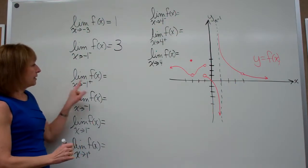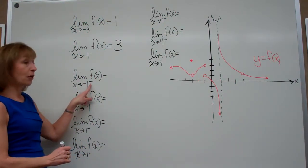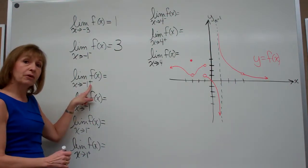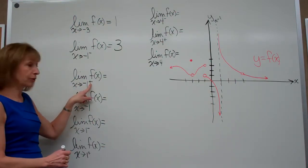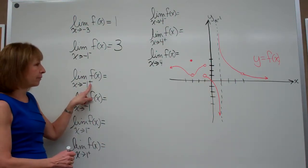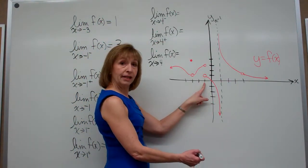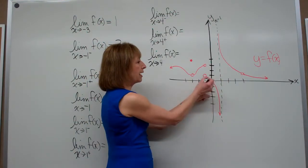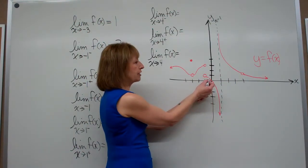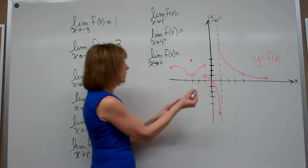The limit of the function values as x approaches negative 1 from the right: if there's a positive sign after the numeral in the values of your independent variable, that means coming in from the right. So here's my x value of negative 1, and if I get closer and closer to it just on the right-hand side, it's approaching a function value of 1.